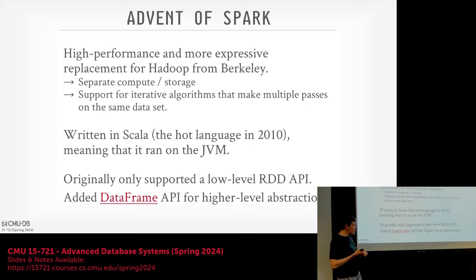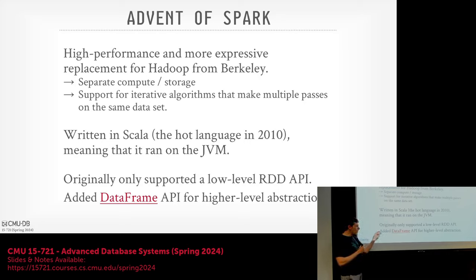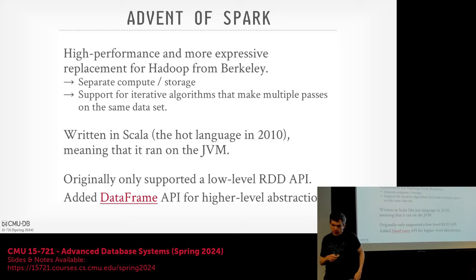The first version of Spark only supported a low-level API based on RDDs — Resilient Distributed Data Structures — essentially a wrapper around task computation output. Later they added the DataFrame API for a higher-level abstraction, which is when Spark really started taking off, letting you run Pandas-like programs in a distributed manner. The early version of Spark didn't support SQL at all; it was all these other programming languages.